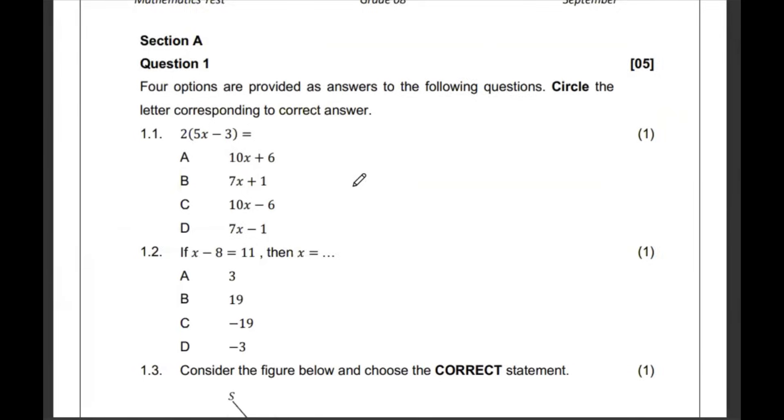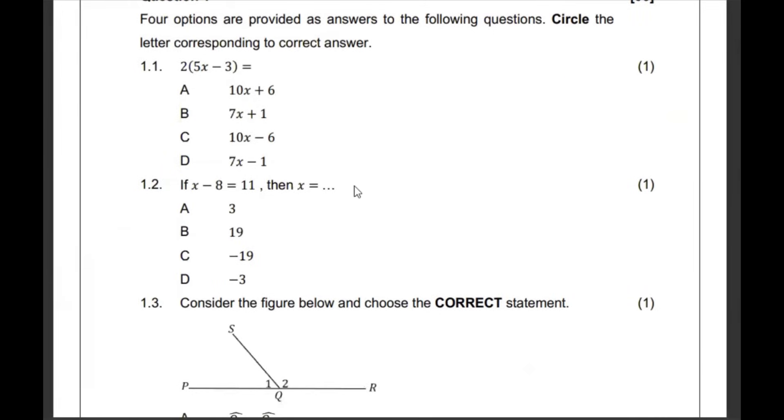So 2 times (5x minus 3), when you open this up, so this 2 affects that, the 2 affects that, so it's going to be 10x minus 6, which is option C. And then if x minus 8 is 11, then what's going to be x? It's going to be 11 plus 8, which is 19, option B.